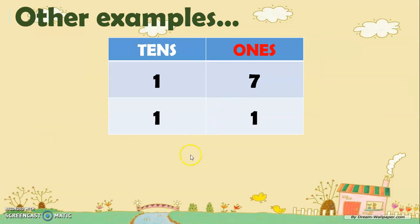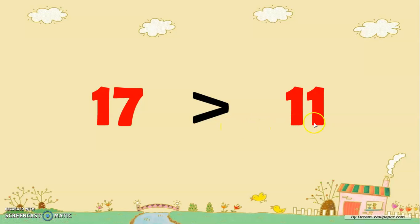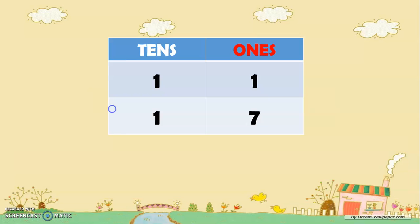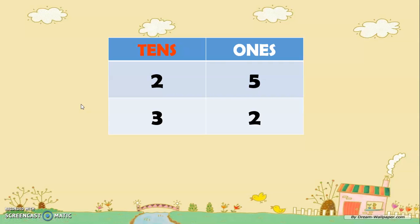Here are other examples. In our place value chart, the number seven in ones is more than the number one, which is also in ones. That is why 17 is more than 11. Next, in this place value chart, 35 is more than 20. Then, we can see that the number one in ones is less than the number seven, which is also in ones. That is why 11 is less than 17.